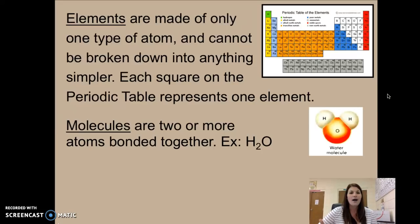So what is an element? Elements are made of only one type of atom. They cannot be broken down into anything simpler. We often call them a pure substance. And this periodic table here, we've seen this before. Each one of these little squares on the periodic table is an element. And each one of these elements has a name and it is made up of only one type of atom.